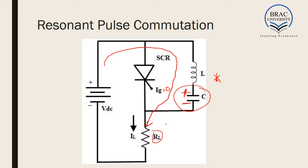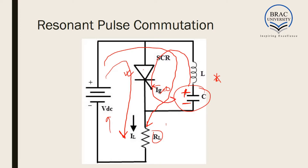If we provide a gate current, the SCR turns on and current flows through the SCR and through the load back to the voltage source. Since this SCR is on and this capacitor is positively charged, it wants to get discharged. It tries to discharge in this path — it firstly charges the inductor, then the inductor passes the current through the SCR and the capacitor gets charged in the opposite direction: plus at the bottom and minus at the top.